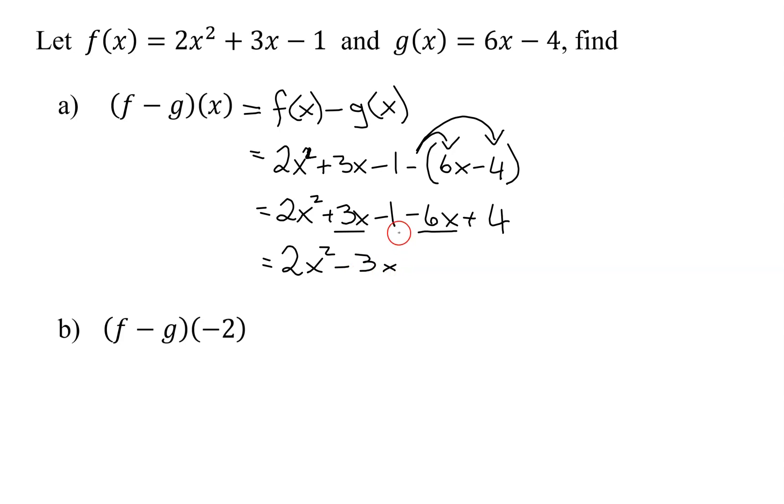And lastly, is there a like term that goes with -1? Yes, it's 4. So -1 + 4 is 3. So my difference function (f - g)(x) is equal to 2x² - 3x + 3.